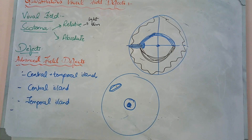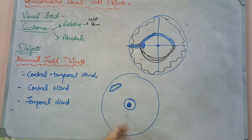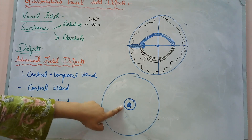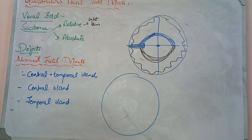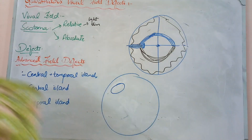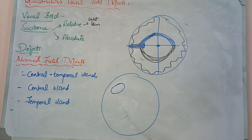This is the concept of central and temporal islands. If the fixation point area is still surviving, we call it a central island. If we have only a temporal area remaining, we call it a temporal island. The other remaining vision is not a central island in that case. This covers all of these advanced visual field effects.